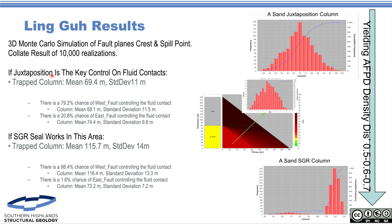From this we can say — and this is the duality we run through the model the whole time — if juxtaposition is the control, we'd see a mean 69-metre column with a standard deviation of 11. That would be our distribution of column heights to run through into your reserves, with a 79% chance it's the West fault and a 20% chance it's the East fault. If SGR works in the area, we get a mean column of 115 metres, with a 94% chance for the West and 1.6% for the East. You can see they're very different distributions.